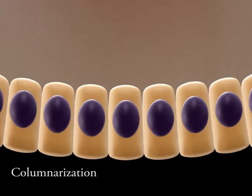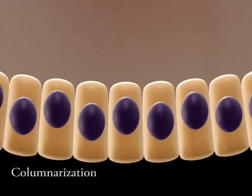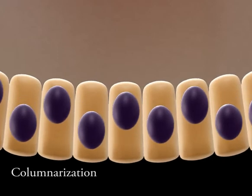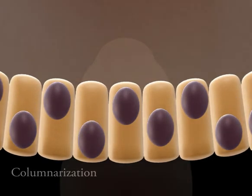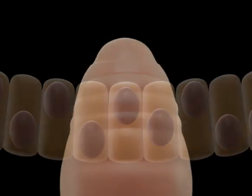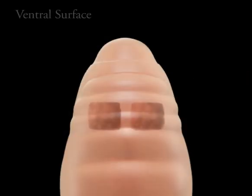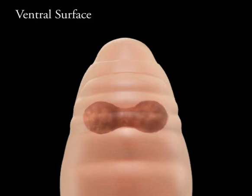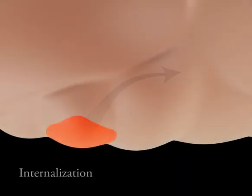As the placode elongates, the cells become columnar and the nuclei randomize. The placode takes on a more rounded appearance. The process of internalization must occur for proper positioning and functioning of the gland.